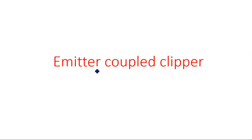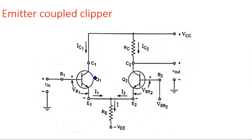In this video, you are going to learn about the emitter coupled clipper, which is a type of transistor clipper. The name clearly tells us that the emitters of two transistors are coupled together, connected to a resistor, and then to a voltage supply. The current flowing through this emitter resistor, I, goes to minus VEE, and it is a combination of the currents from emitter one and emitter two.